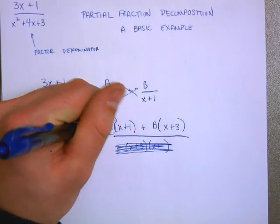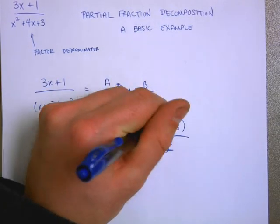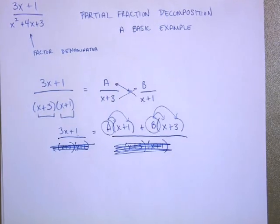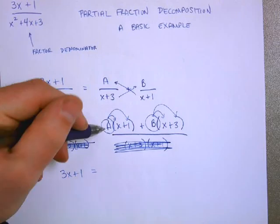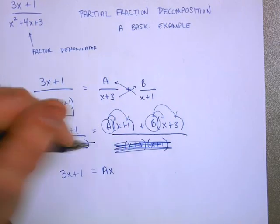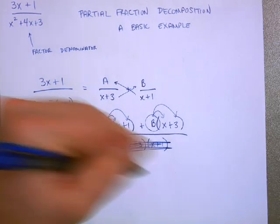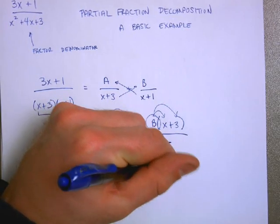So I'm going to take this A, I'm going to multiply it through, I'm going to take the B, and I'm going to multiply it out, distribute the property twice, and I see that 3x+1 must be equal to Ax + A + Bx + 3B.